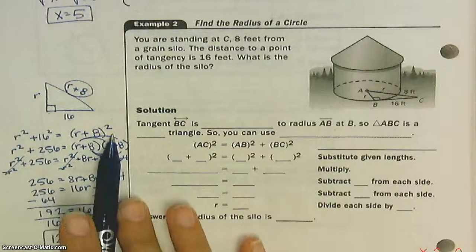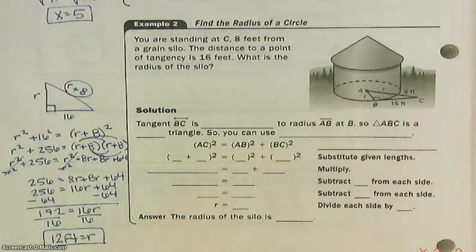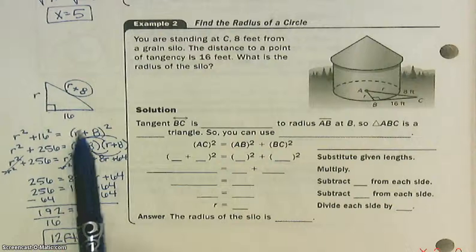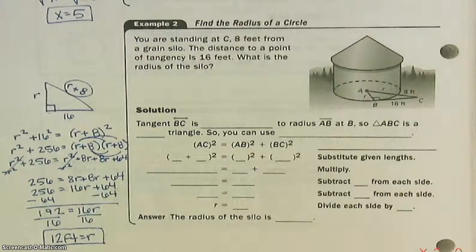The radius is approximately 12 feet. So, it started with the Pythagorean theorem. And then we had to do some algebra to get to the end. But notice it's still A squared plus B squared equals C squared. You have to remember the algebra here to get the answer right.